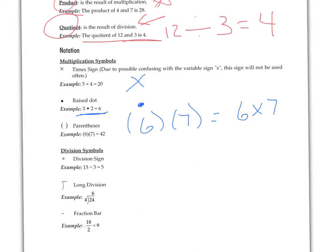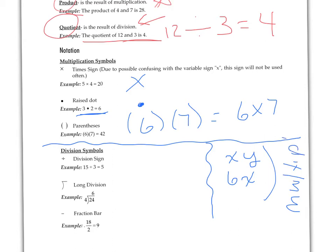There is one other multiplication symbol, or it's actually not even a symbol that isn't listed here, and that's writing letters and or numbers right next to each other with no symbols is multiplication. So that's another way to write multiplication.